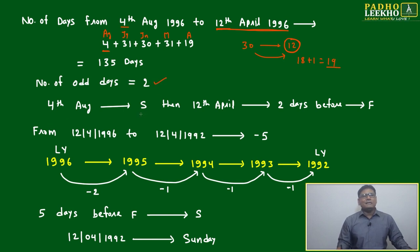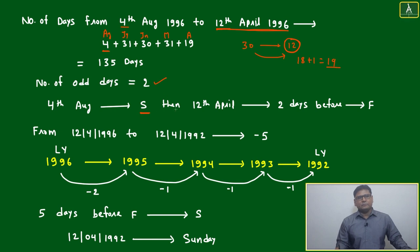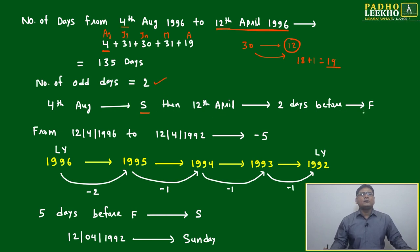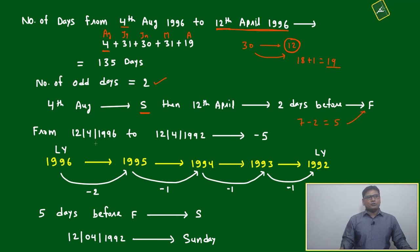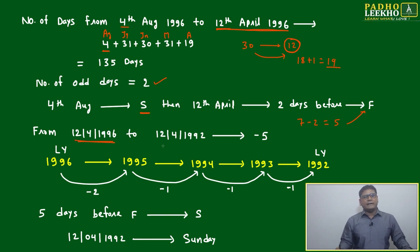4th August is Sunday (given). 12th April is two days before it, so 7 minus 2 = 5, which is Friday. We now have clarity: 12th April 1996 is Friday.